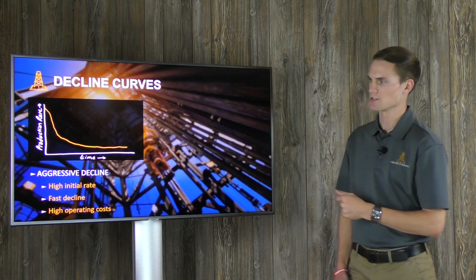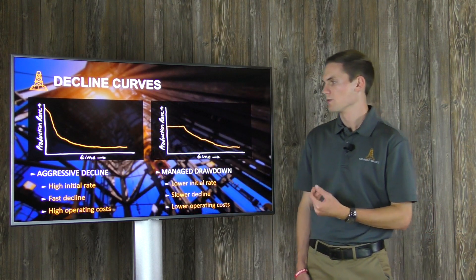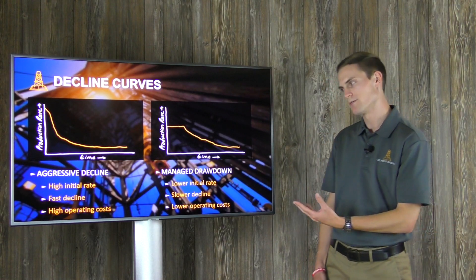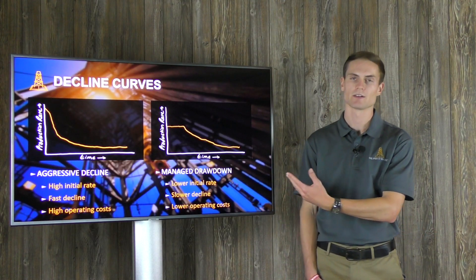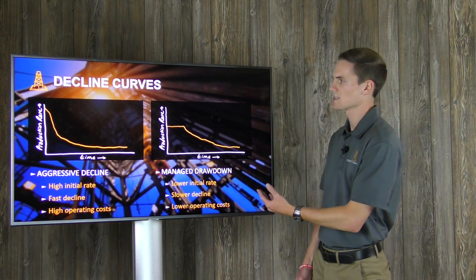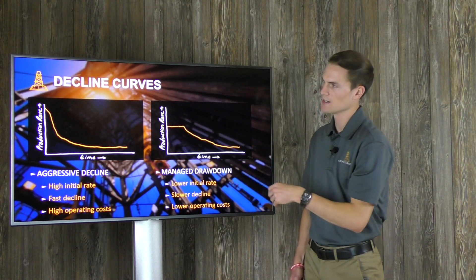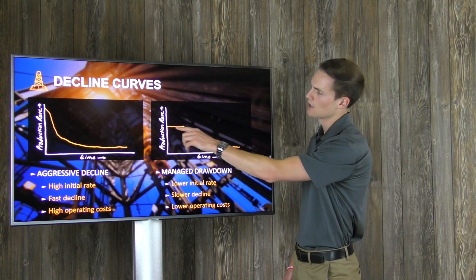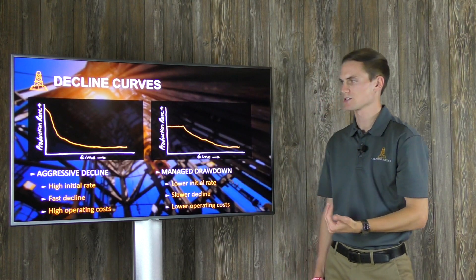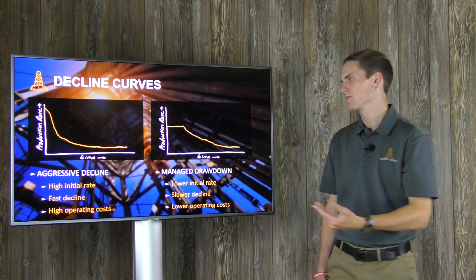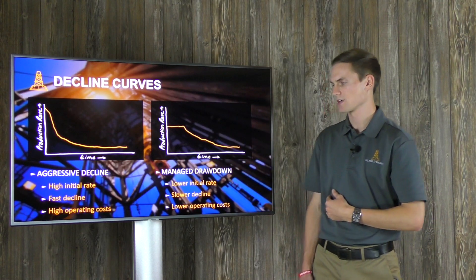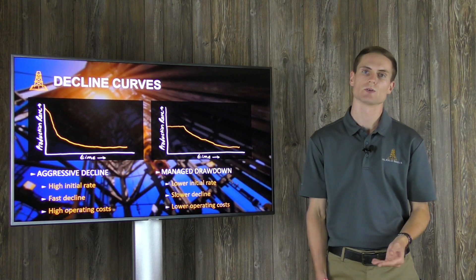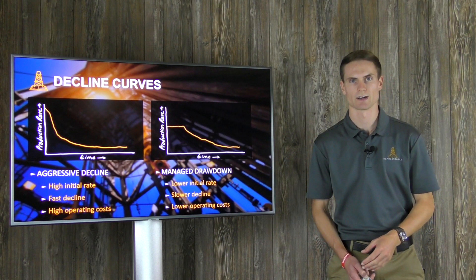Here's option number two: a managed drawdown — which is a whole other video in itself. What this allows us to do is choke the well back initially at the front of production. Our production rate will be a little bit lower, but it will also hold out a little bit longer, giving us a less steep decline, and we don't need to size our equipment as much. Again, all of this just comes back to economics — this represents a more sustainable rate.